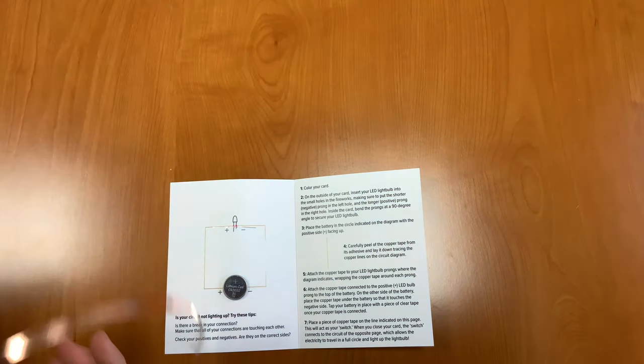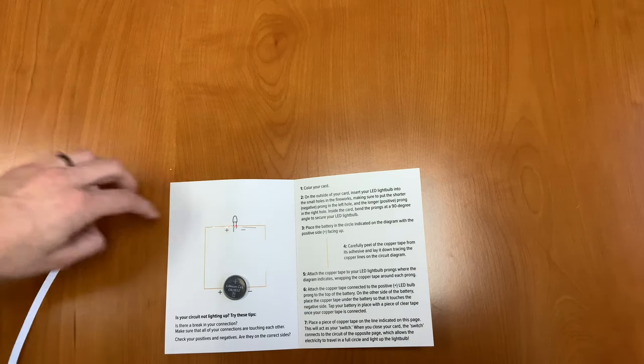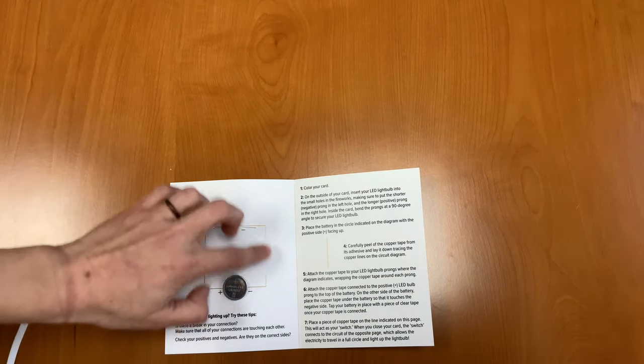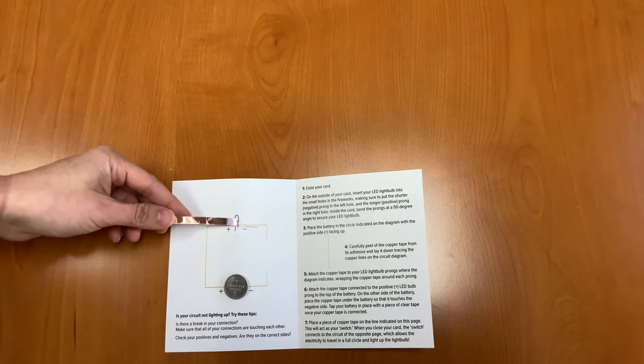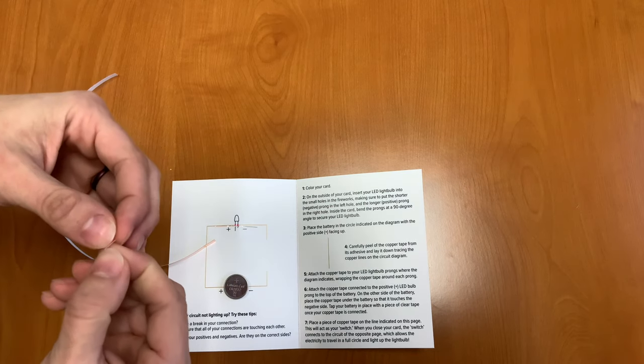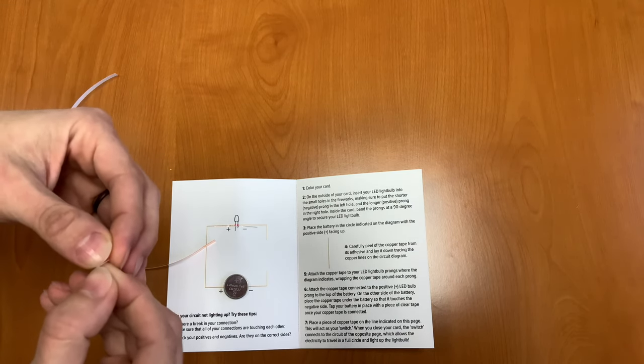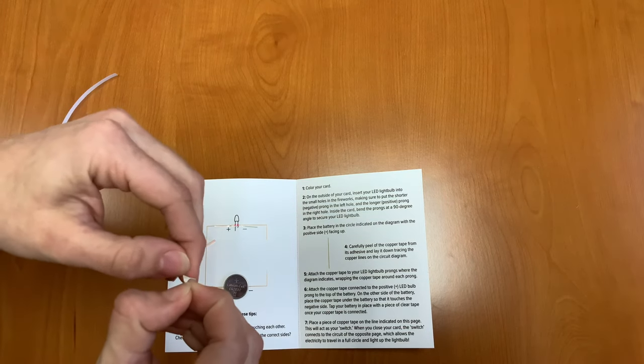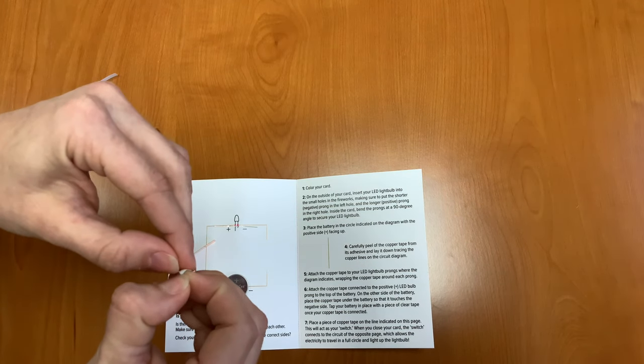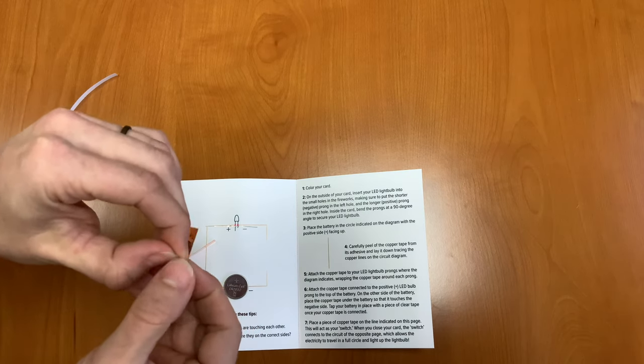Next we're going to carefully peel our copper tape from the adhesive and lay it down tracing all the copper lines on the circuit diagram. So the easiest way to do this is to measure and cut how much copper tape you need, because this stuff is really sticky and it likes to stick to itself. So cutting it in smaller pieces really helps handling it.